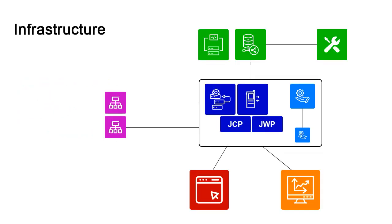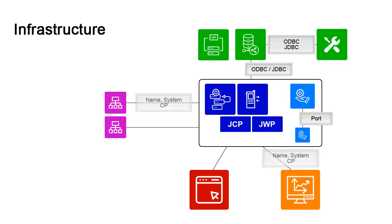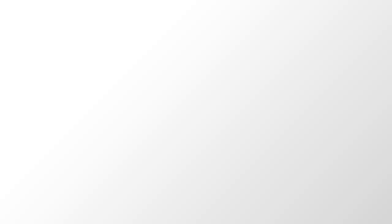Let's go back to the infrastructure diagram to consider the more notable settings. Utilities connect to the database by way of the ODBC and JDBC connections, as does the server. The Service Manager handles processes that are local, but the Service Manager dialog does require the SM port to connect to remote Service Managers. Agents and analytics connect to the server via the system and CP settings, and are identified with the name setting. AWI points to the server via the CP setting.